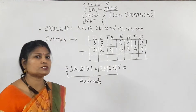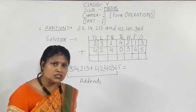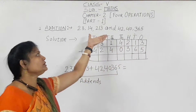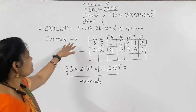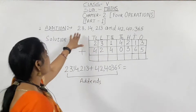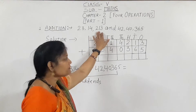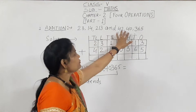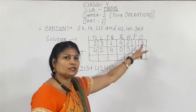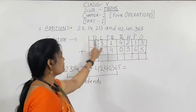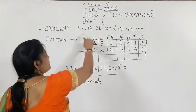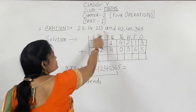Everybody knows the meaning of addition — if any numbers are given to us, we will add them. Now, in this question, two numbers are given: 23,14,213 and 42,40,365. How do we add? We will make a place value chart and arrange the first and second number. Keep in mind, we will arrange our numbers from the rightmost place to the left.